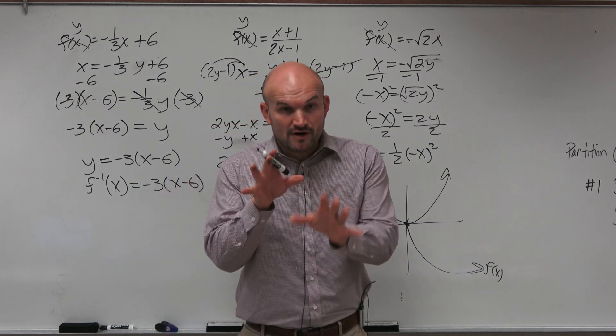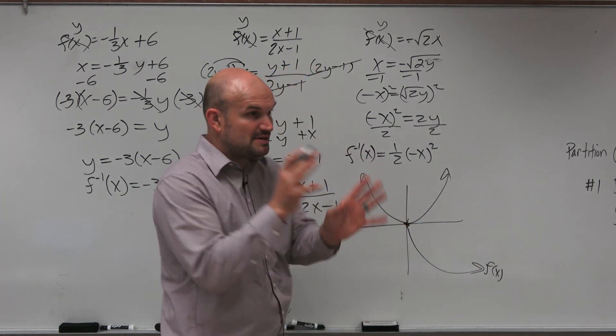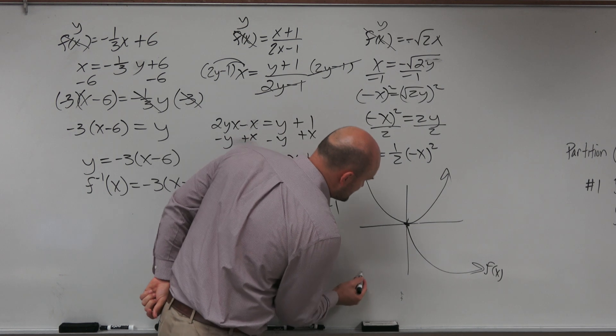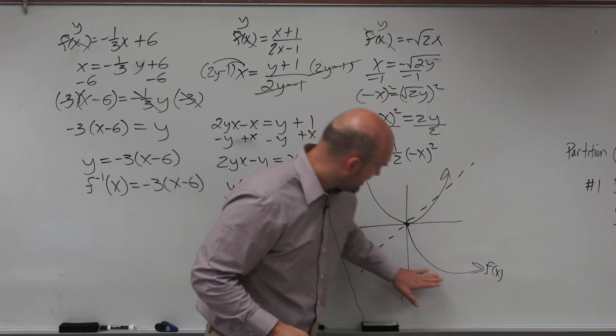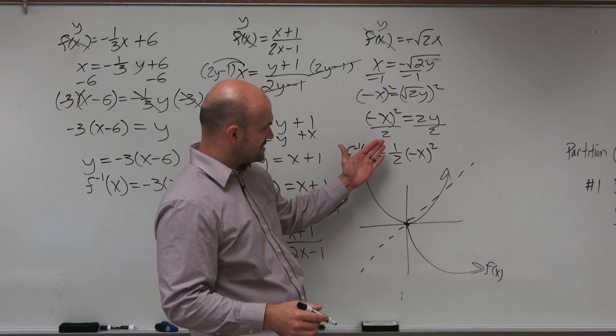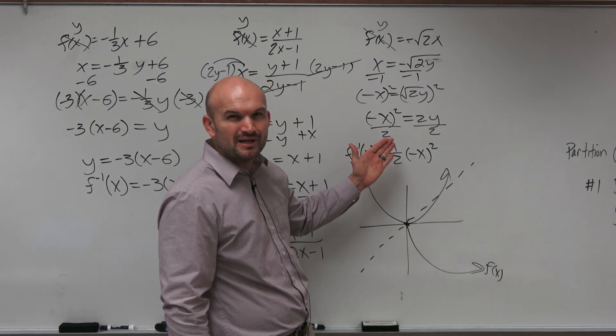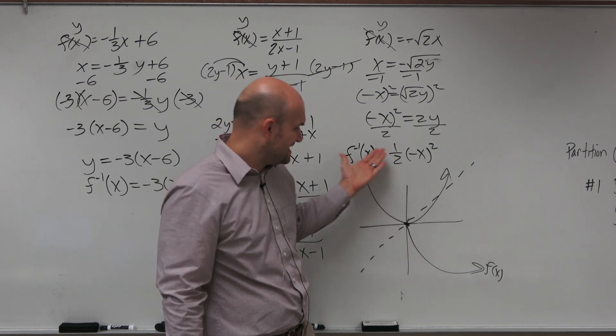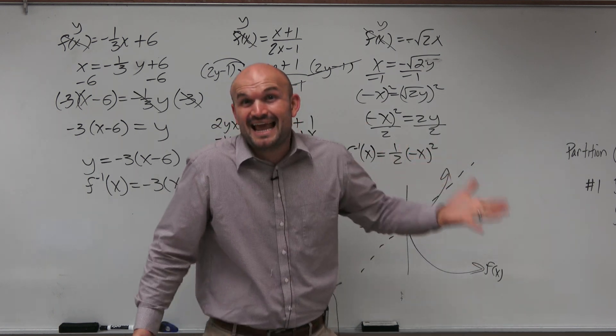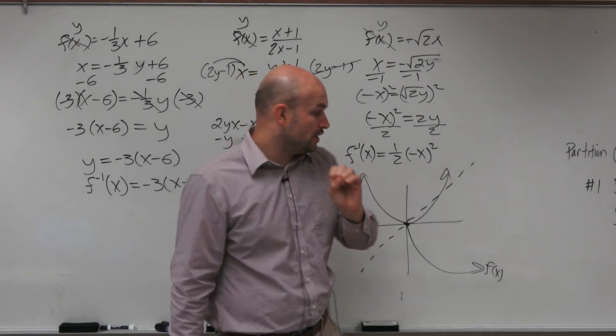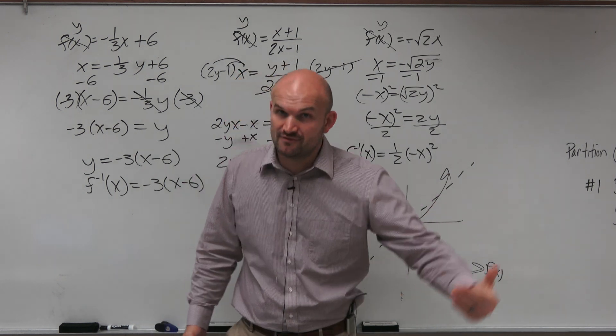Now remember, a function and its inverse, the whole reason why we swap the x and the y is because they are symmetrical about the y equals x line. So does this graph, when you flip it across this dashed line, does it produce a parabola? No, that doesn't even make any sense. How does this produce now a double equation? It doesn't. It can't. Right? So what that means is it only produces a portion of the function.